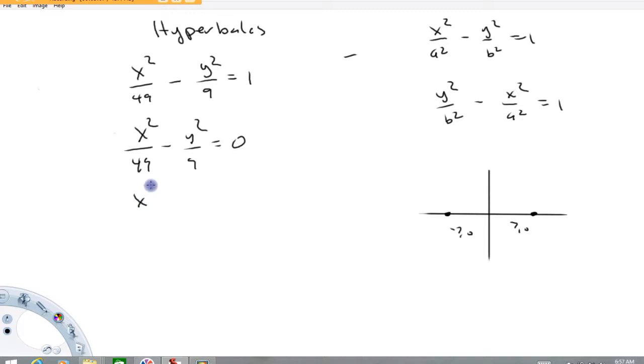If I move this over to the right, this is going to read x squared over 49 is equal to y squared over 9. And I'm going to solve this for y. So let's see, y squared is going to equal 9 over 49 times x squared. And if we square root both sides now, we're going to get y equals plus or minus 3 sevenths x. So what I have here now is the equation for a pair of lines that go through the origin. One of these equations is y equals 3 sevenths x. The other equation is y equals minus 3 sevenths x.